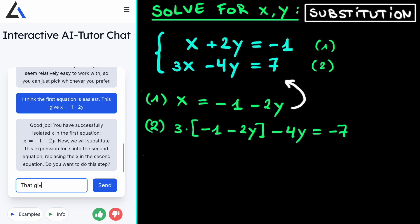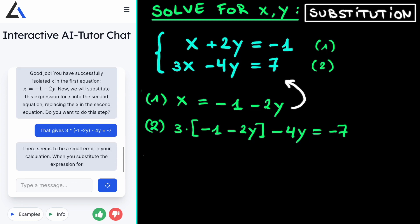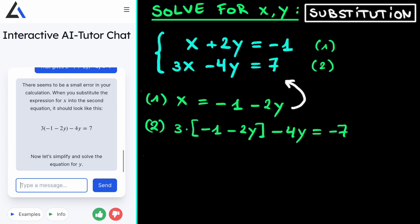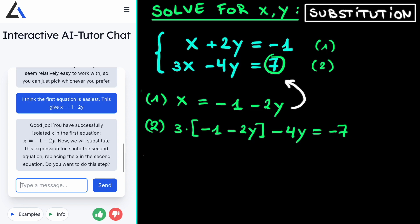And again to check whether we made any mistakes or not, we fill in what we found in the AI Tutor. And in fact, in this case we did make a mistake, albeit a quite small one. The AI Tutor points out that instead of plus 7 that we had on the right hand side in our original equation, we now wrote minus 7, which is evidently wrong. So we simply correct our mistake and write plus 7.